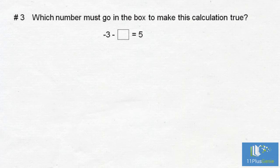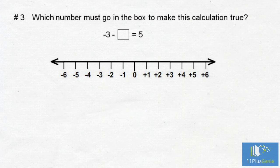Number three: Which number must go in the box to make this calculation true? Negative 3 take away something equals 5. Let's first look at what we must do to negative 3 to get to 5. We start on negative 3 and we must move to the right: 1, 2, 3, 4, 5, 6, 7, 8 units to get to 5.